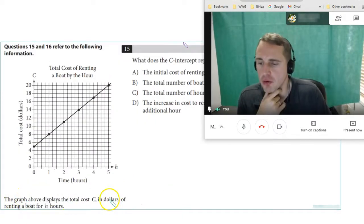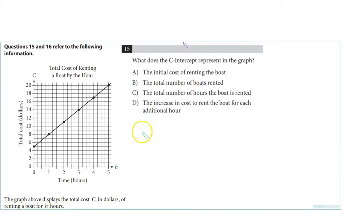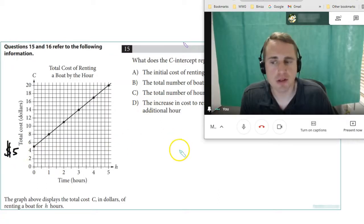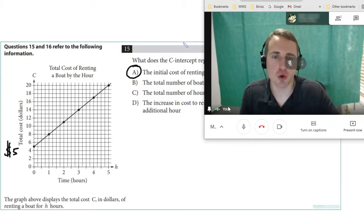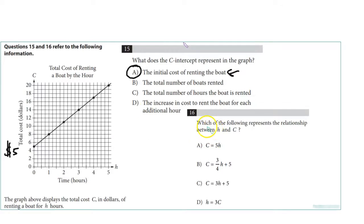Number 32: We have a graph above that displays the total cost C in dollars of renting a boat for H hours. What does the C intercept represent on the graph? Notice that that's $5. That's $5 just to rent the boat, not how much you have to pay per hour. So that's the initial cost to rent the boat, because that's like if you rent the boat but then you get out to the shore and you bring it right back, they're still going to charge you $5. Which of the following represents a relationship between H and C? C is the cost. It's probably easiest to get the cost in terms of the slope. The cost would be $5 in terms of the initial cost. But then we need the slope. Notice that if we go from 5 to 8, the slope equals 3. So that's why you should answer this: letter C. 3 is the slope and 5 is the y-intercept.